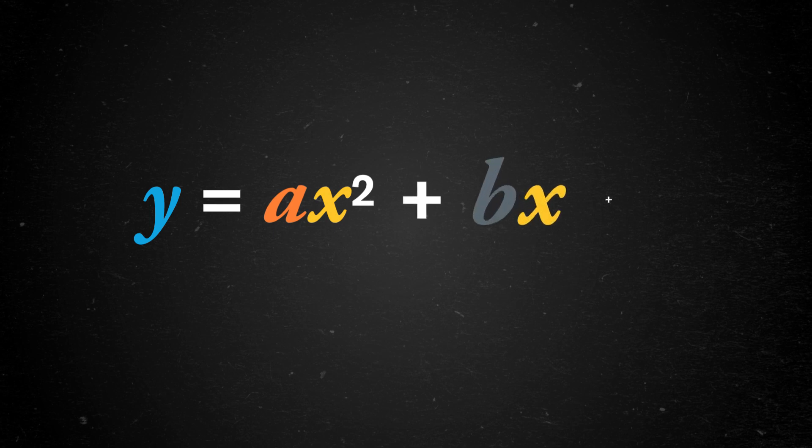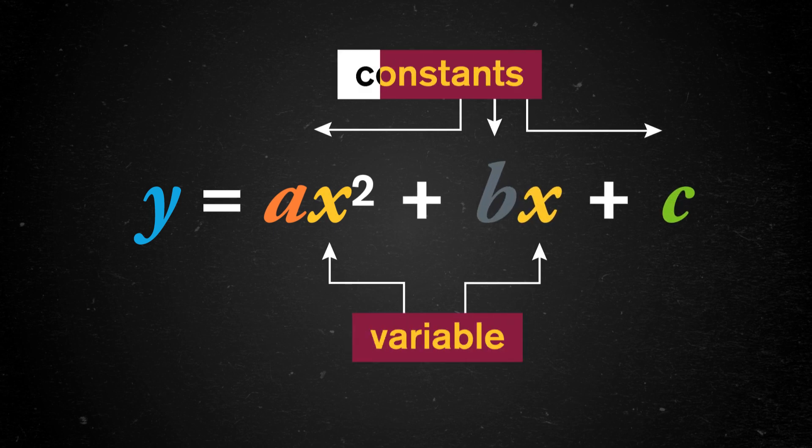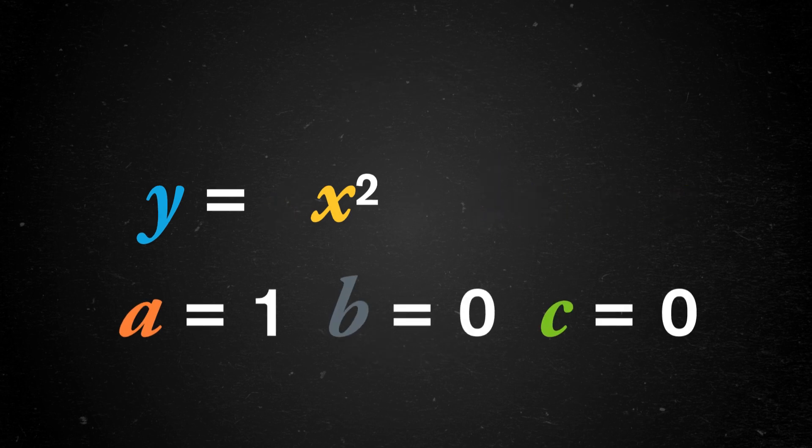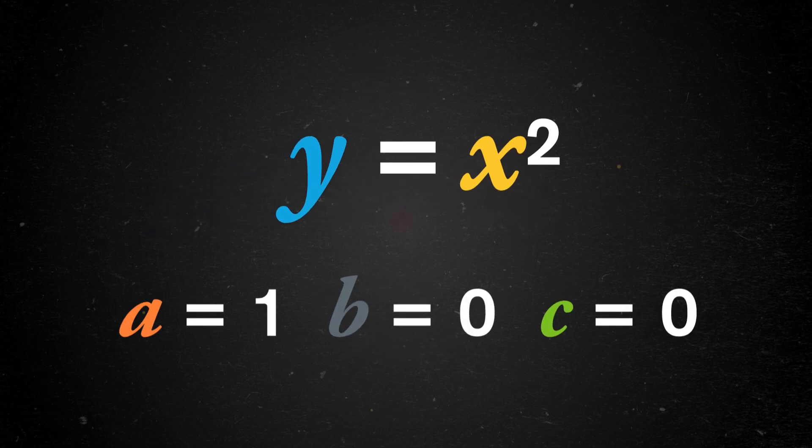Jokes aside, the graph of any other quadratic equation is just this plot, transformed. The basic symmetry always stays the same, which is kind of magical – almost like y equals x squared is a chameleon. A standard quadratic equation looks something like y equals ax squared plus bx plus c, where x is our variable and a, b, and c are constants. So with a equal to 1, and b and c equal to 0, y equals x squared is the simplest quadratic relationship out there.